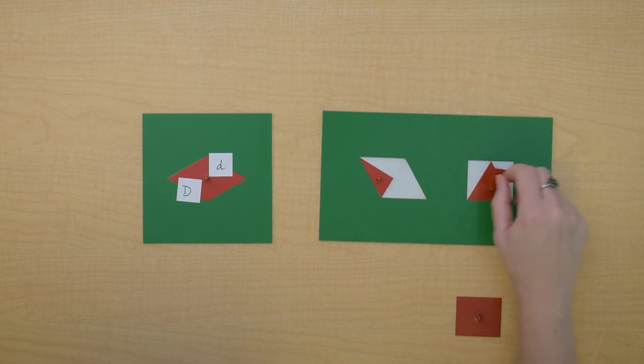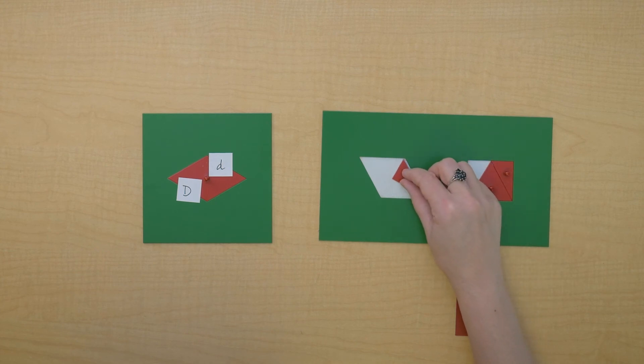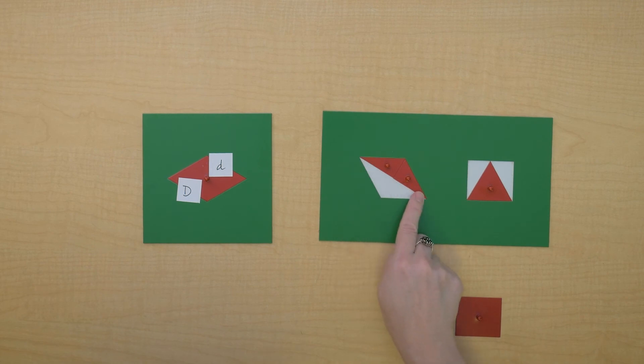And then what about the height? Well, the height, let's just take another peek at it here, was half of the major diagonal.